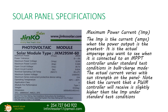Maximum power current, indicated by Imp, is the current in amps when the power output is the greatest. This is the actual average current you want to see when a solar panel is connected to an MPPT charge controller under standard test conditions in bulk charge mode.